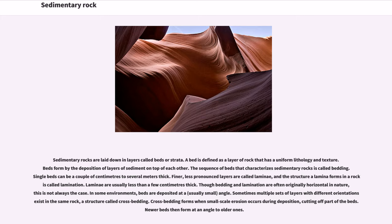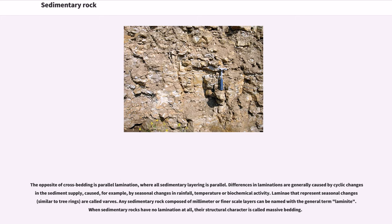Laminae are usually less than a few centimeters thick. Though bedding and lamination are often originally horizontal in nature, this is not always the case. In some environments, beds are deposited at an angle. Sometimes multiple sets of layers with different orientations occur in the same rock, a structure called crossbedding. Crossbedding forms when small-scale erosion occurs during deposition, cutting off part of the beds. The opposite of crossbedding is parallel lamination, where all sedimentary layering is parallel. Differences in laminations are generally caused by cyclic changes in the sediment supply, caused for example by seasonal changes in rainfall, temperature or biochemical activity. Laminae that represent seasonal changes are called varves.